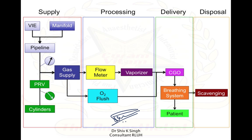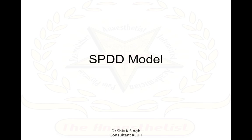There are also other processes included within that — they might involve monitoring all the flows and monitoring of the anesthetic gases, which all come within the processing unit. So it is a lot more complex than this, but this is just simplifying the whole anesthesia machine system. This is known as the SPDD model.